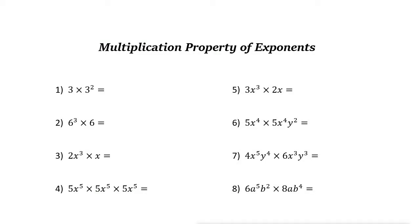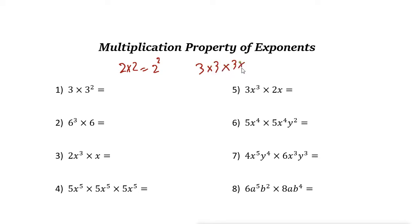Multiplication property of exponents. Exponents are shorthand for repeated multiplication of the same number by itself. For example, instead of writing 2 times 2, we can write 2 squared. Or instead of 3 times 3 times 3 times 3 — multiplying 3 by itself 4 times — we can just write 3 to the power of 4.